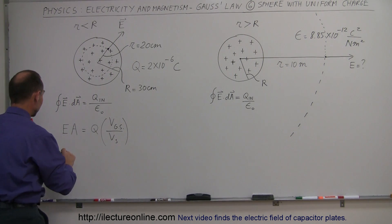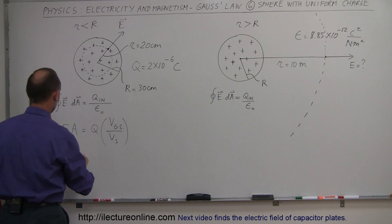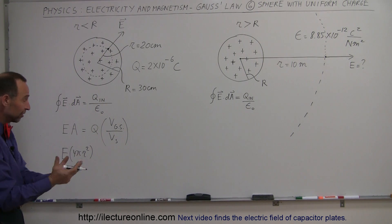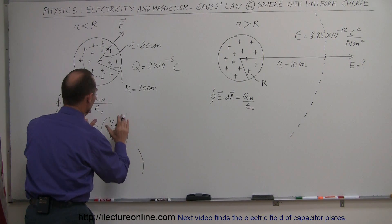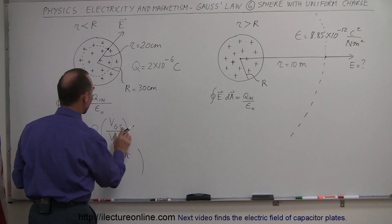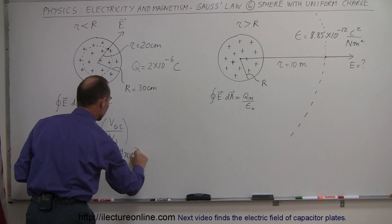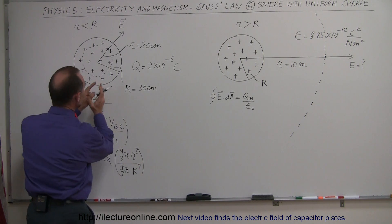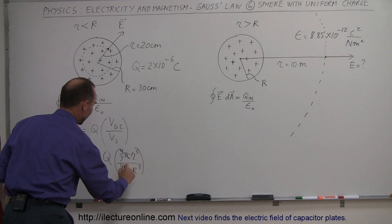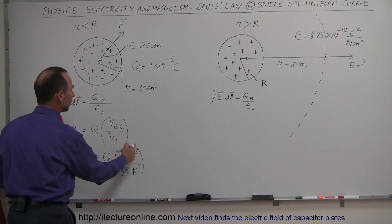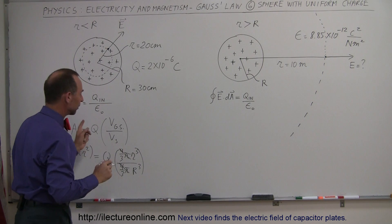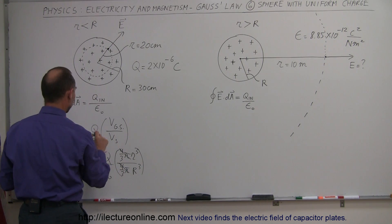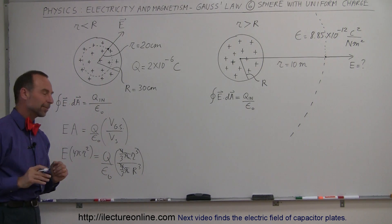Now we plug in the expressions. E times the area of the Gaussian surface, 4πr², equals the total charge Q times the ratio of the volume of the Gaussian surface — (4/3)πr³ — divided by (4/3)πR³, where R is the radius of the whole sphere, all divided by epsilon sub-naught. Notice the (4/3)π terms cancel, leaving simply the ratio of r³ divided by R³. Don't forget epsilon sub-naught.